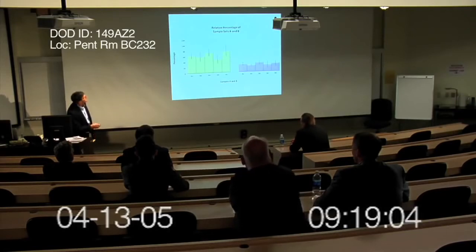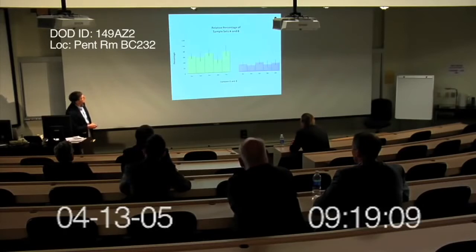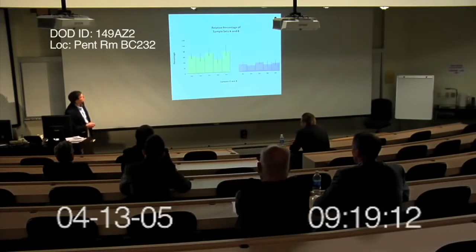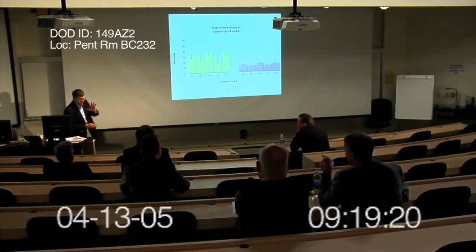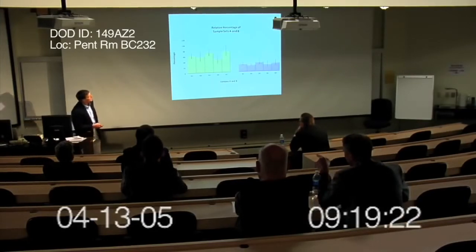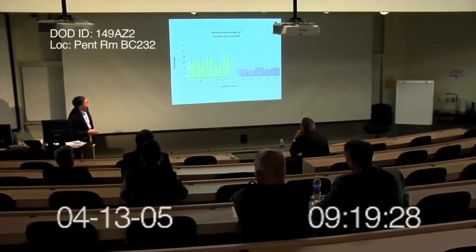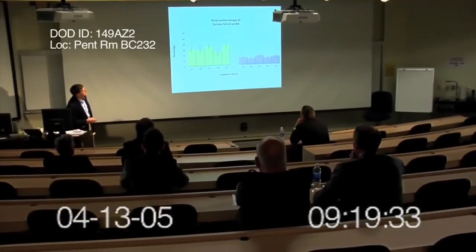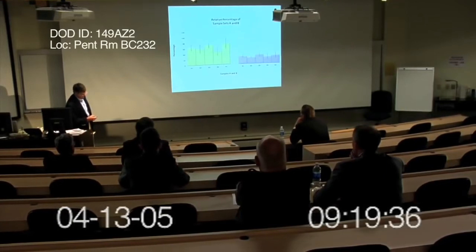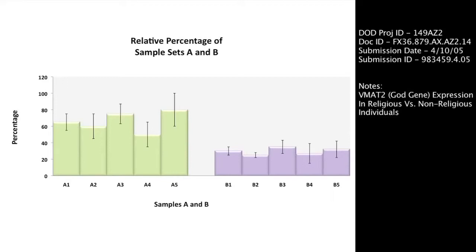Excuse me, on the left over here, we have individuals who are religious fundamentalists, religious fanatics, and this is the expression — RT-PCR, real-time PCR expression of the VMAT2 gene. Over here, we have individuals who are not particularly fundamentalists, not particularly religious, and you can see there's a much reduced expression of this particular gene, the VMAT2 gene. Another evidence that supports our hypothesis for the development of this approach.